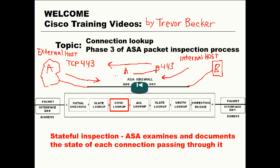The behavior and activity of the packets from the source and destination must follow the rules of the IP protocol that is being used. If the connection state or the behavior of those packets deviate from what the ASA defines as accepted behavior, the ASA will drop the connection and the incident will be logged in the device's logging buffer.